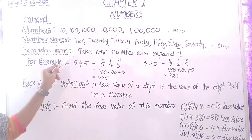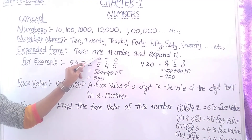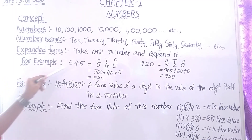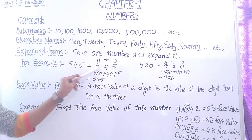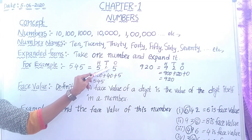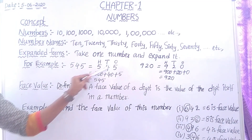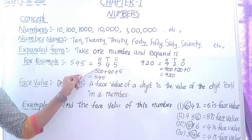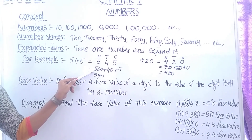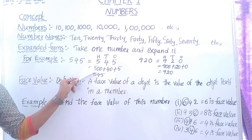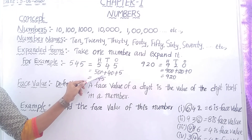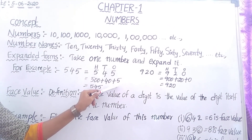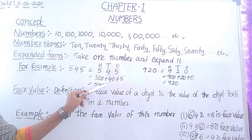Next, expanded forms. Expanded form means: take one number and expand it. For example, 5, 4, 5. First, find out the places of this number: 5 in the 1's place, 4 in the 10's place, 5 in the 100's place. So: 5 in 100's place is 500; 4 in 10's place is 40; 5 in 1's place is 5. Equal to 545.